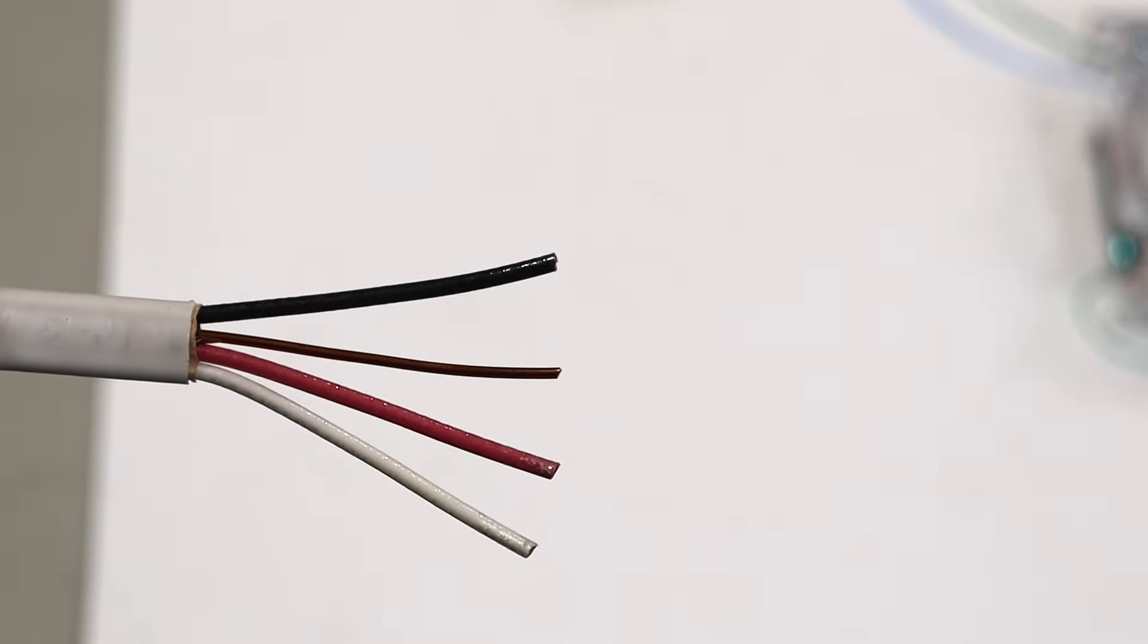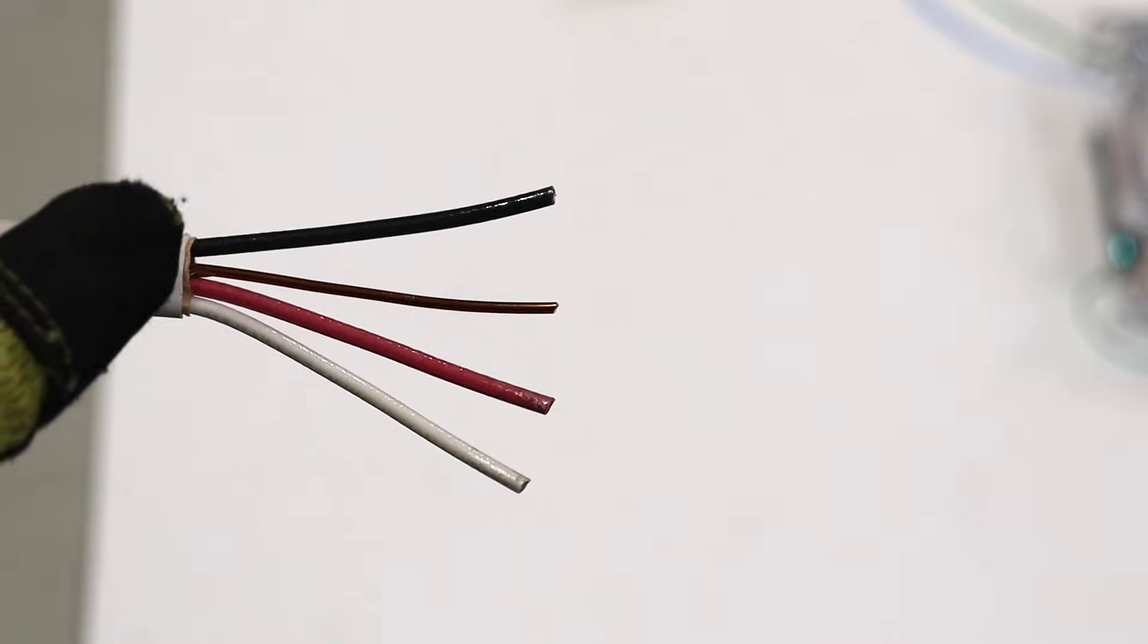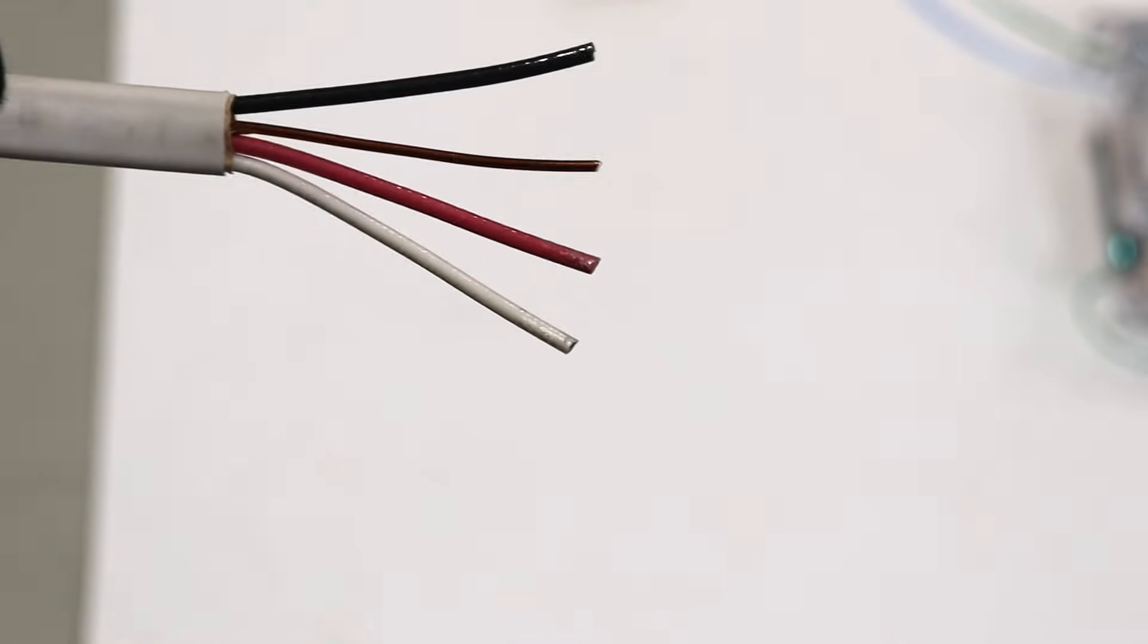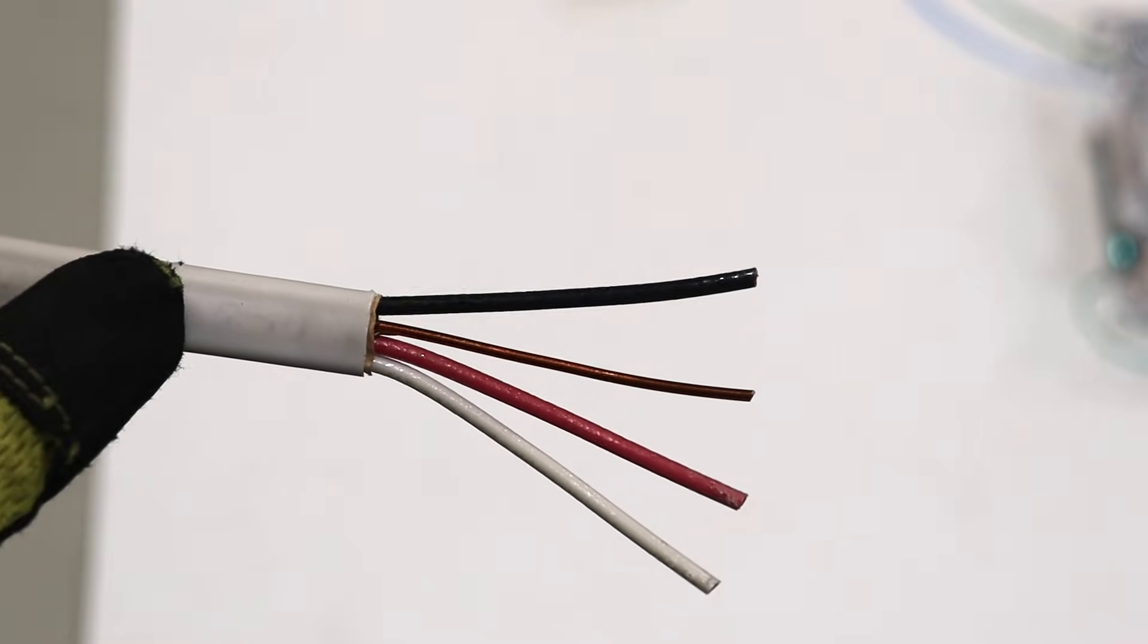So if you do have two switches or you're planning on installing a junction box with two switches up to a fan light combo this is what you're going to use. You're going to use 14 three wire.